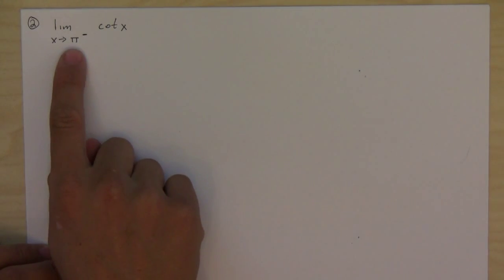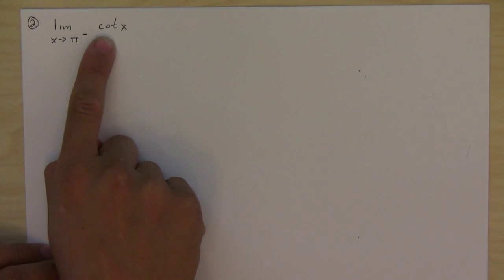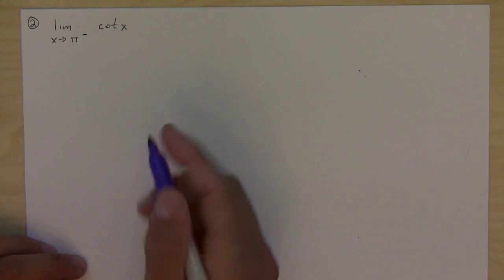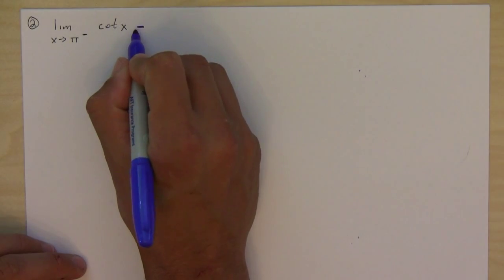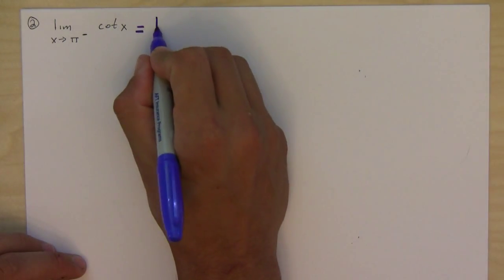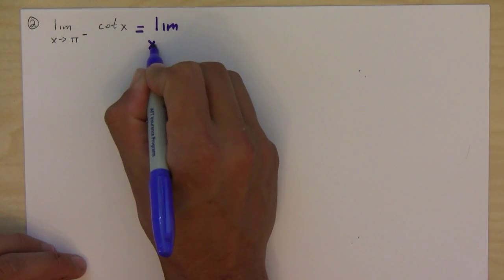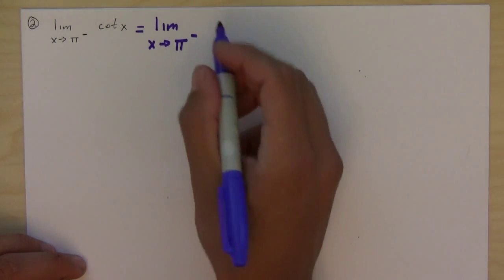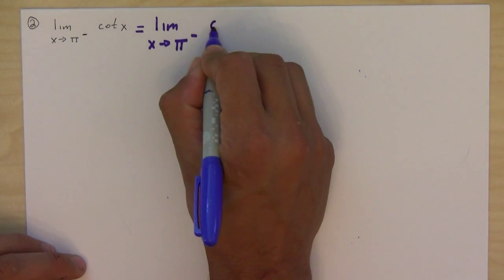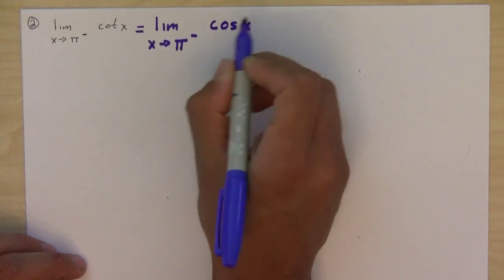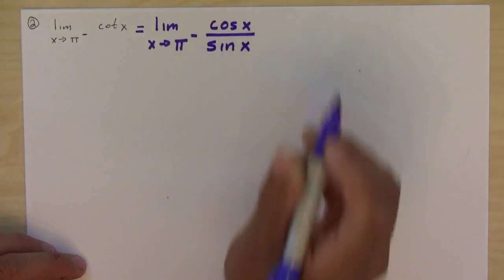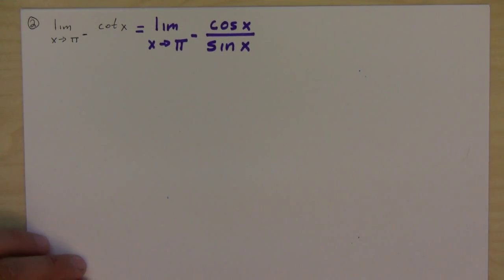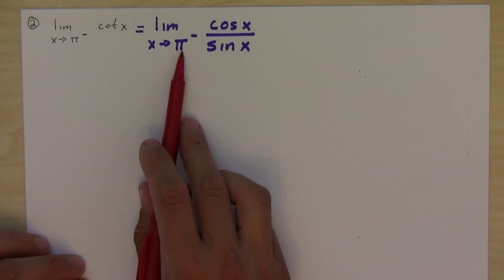In this problem we're looking at the limit as x approaches pi from the left of cotangent of x. It might be easier to think of it not as cotangent of x, but to break it down into cosine of x over sine of x, and let's try to figure out what's going on here.